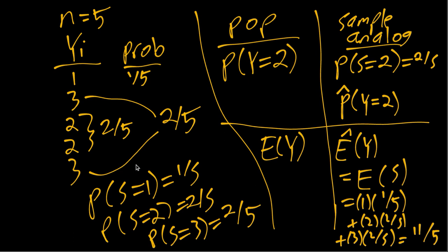And that's also the same as the sample average of y. If we just look back at our raw data, right? 1 plus 3 plus 2 plus 2 plus 3 is 11. Our n is 5. So our sample average is 11 divided by 5, just like we had.